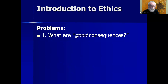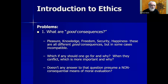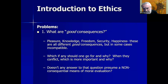The problems — and maybe this has already occurred to you — is what precisely are these alleged good consequences that we should pursue? Pleasure, knowledge, freedom, security, happiness — these are all different good consequences, but sometimes they're incompatible. In order to give you knowledge, I may have to tell you something very unpleasant to hear, so I can't maximize both your pleasure and knowledge at the same time. Or sometimes, to protect your security, I have to reduce your freedom, meaning I can't pursue both consequences simultaneously.